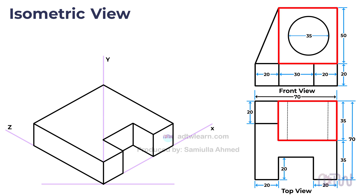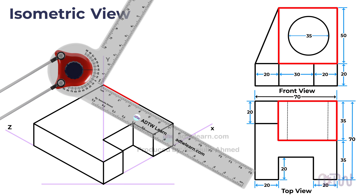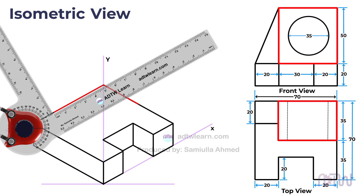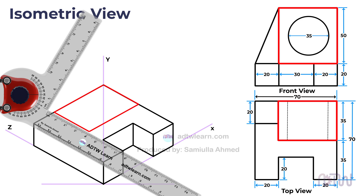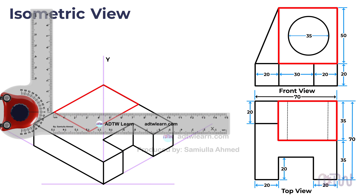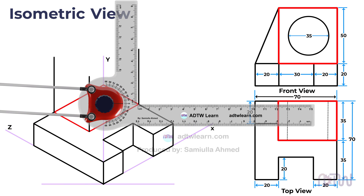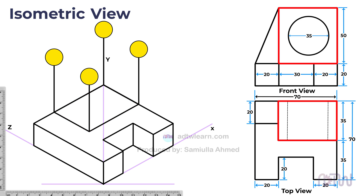Now we will draw the square shape on top of the base. In the top view, the width of this shape is 35 millimeters, and in the front view its length is 50 millimeters. Starting from this point on the isometric view, draw a 35 millimeters line parallel to the z-axis. Then draw another line of 50 millimeters parallel to the x-axis, connecting the endpoints to form a rectangle. The height of this rectangle is 50 millimeters in the front view, so use a drafter to draw vertical lines of 50 millimeters from each corner point, then connect the endpoints to complete the square shape on top of the base.